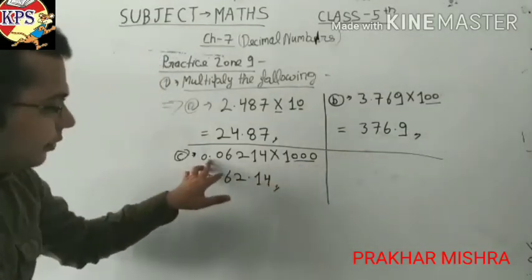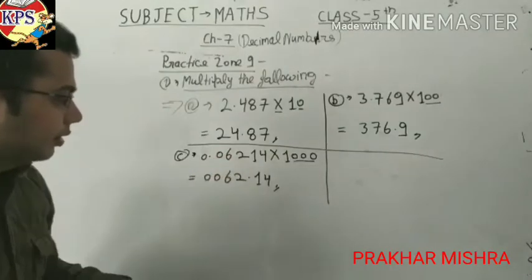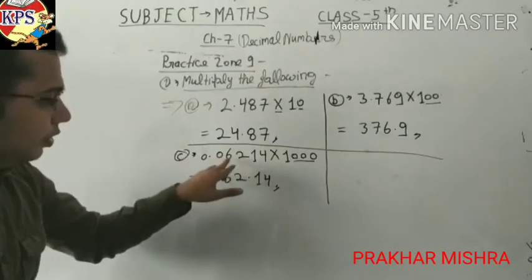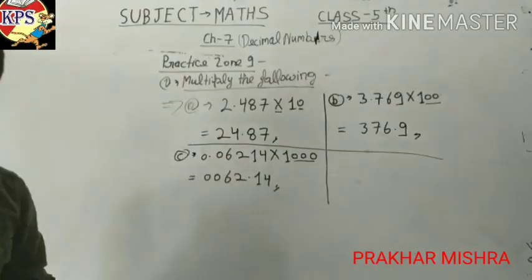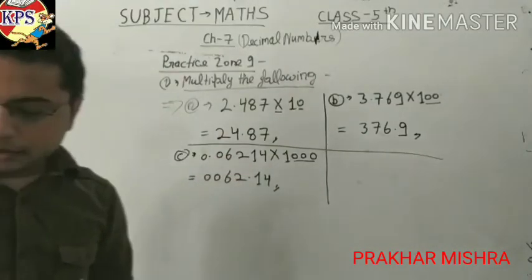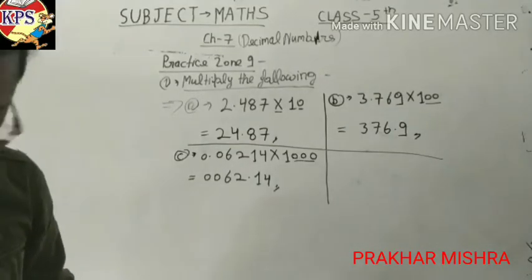That's why we will shift the point after three numbers: one, two, three. Mention the point here. This is about multiplication.